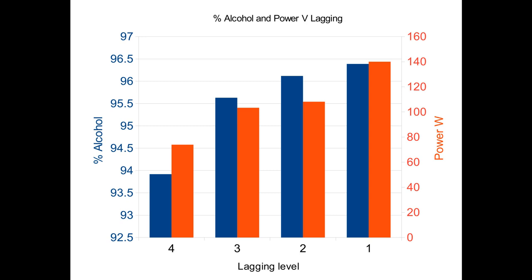It does make sense because higher heat losses from the lower part of the column equates to more condensation of vapour and shortening of the lower stages, giving more room for the higher isothermal stages. Level 1 lagging leads to around a 50-watt increase in power consumption, and as the still runs continuously for weeks that adds up to a significant cost.